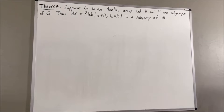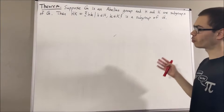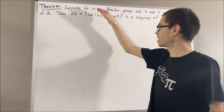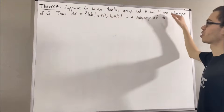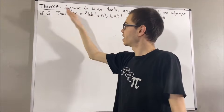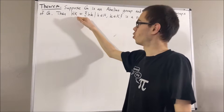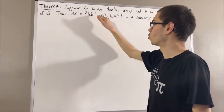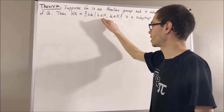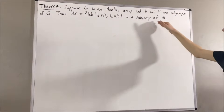Hello! In this video, we are going to prove the following theorem. Suppose g is an abelian group and h and k are subgroups of g. Then, the set hk, which consists of the elements of the form h times k, where h is an element of h and k is an element of k, is a subgroup of g.